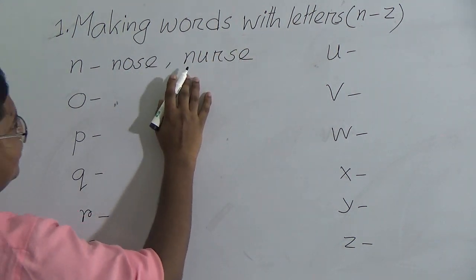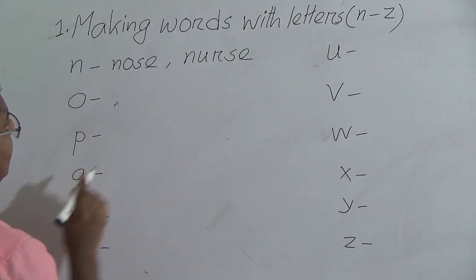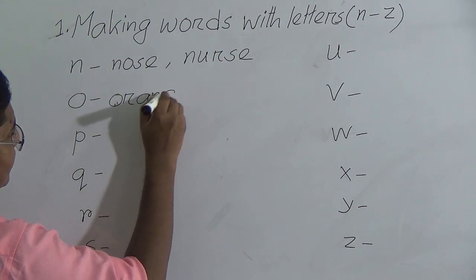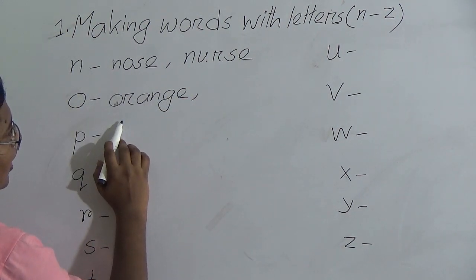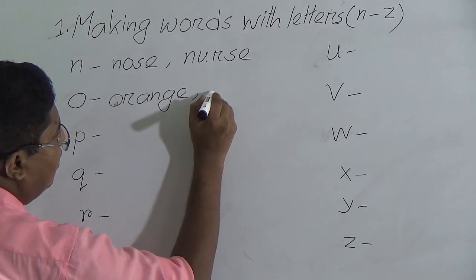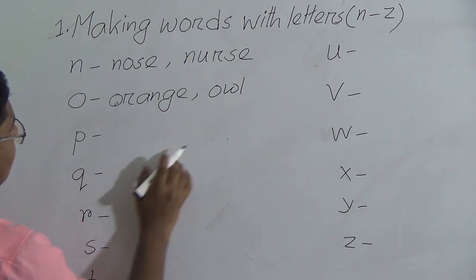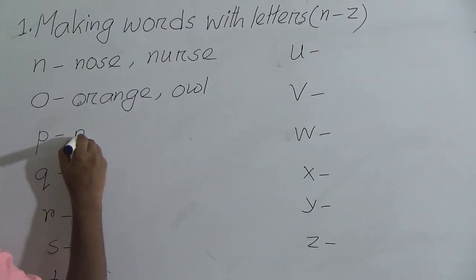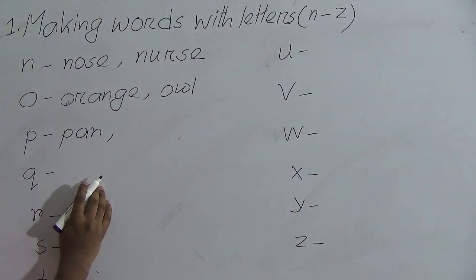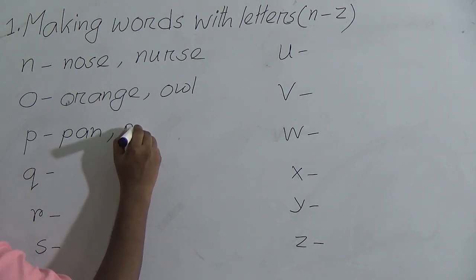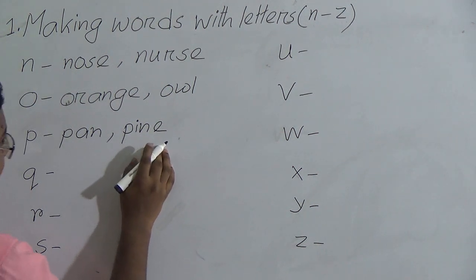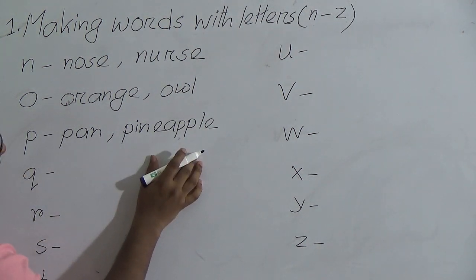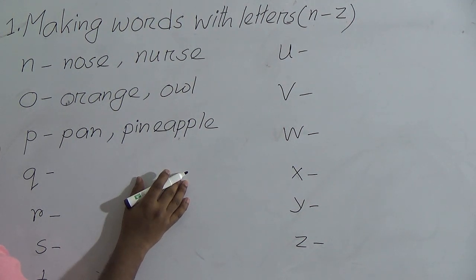N for nose, spelling N-O-S-E. N for nurse, N-U-R-S-E. N for nose, N for nurse. Next one: O for orange, O-R-A-N-G-E. O for owl, O-W-L. O for orange, O for owl.